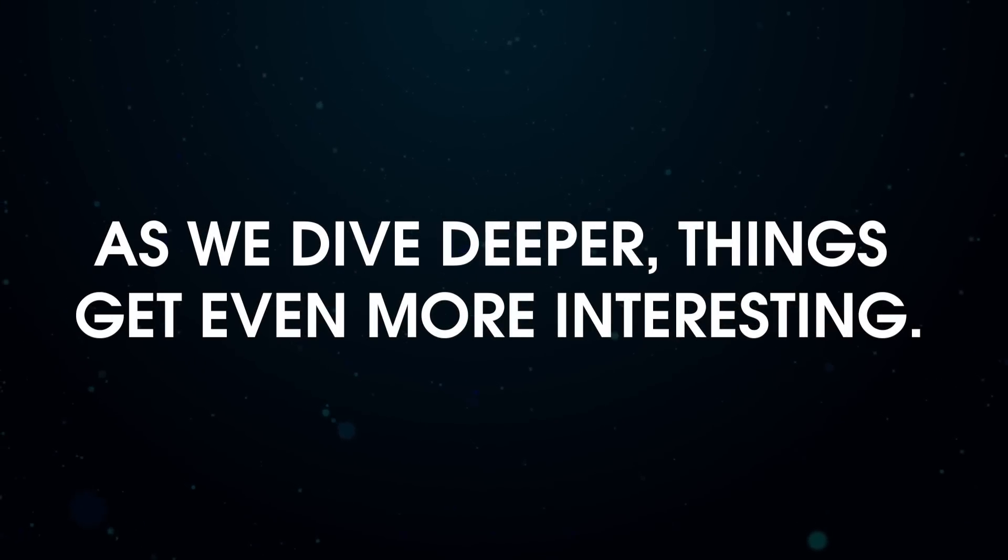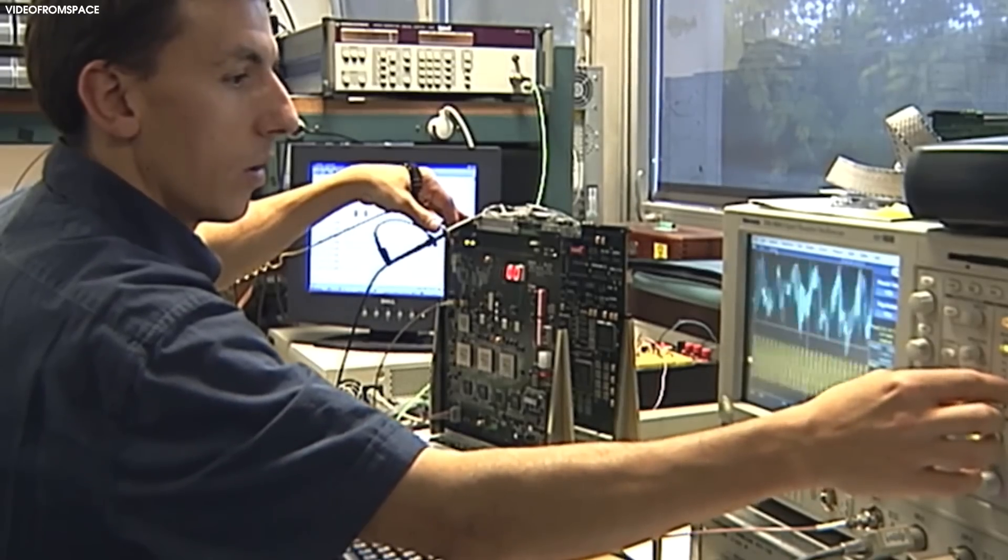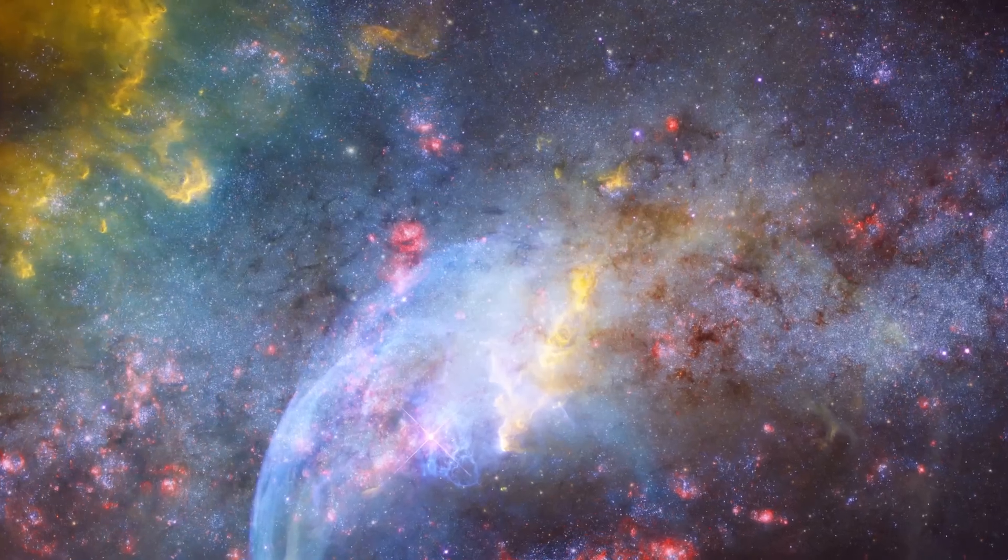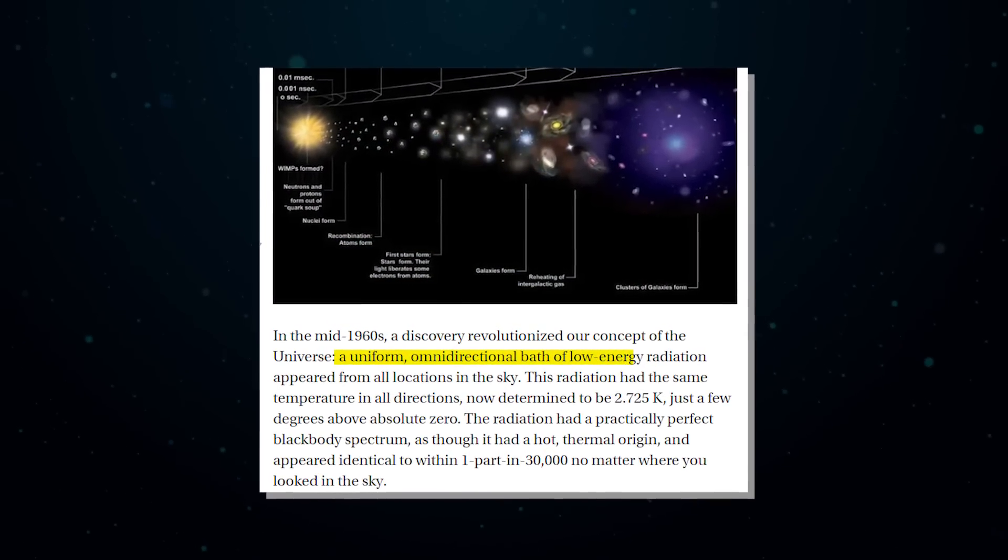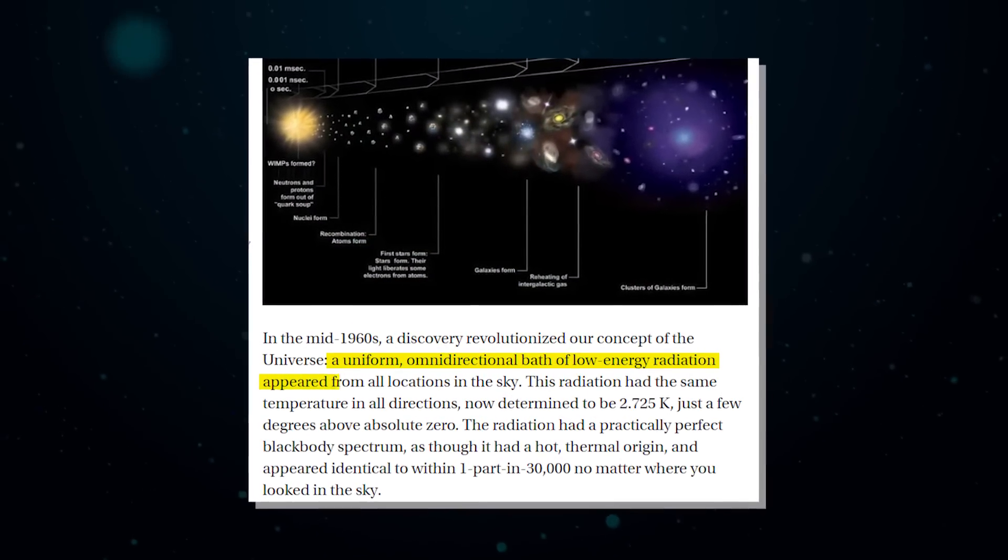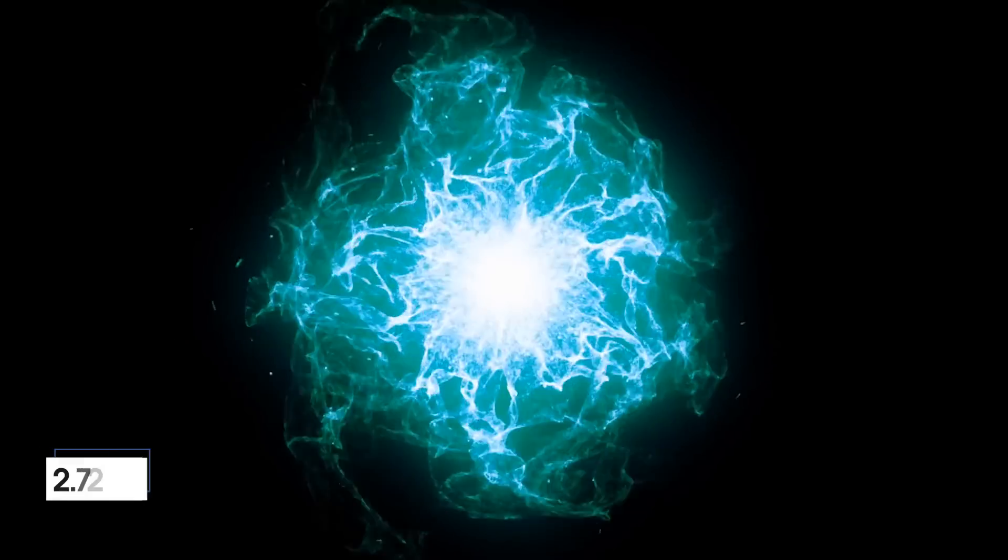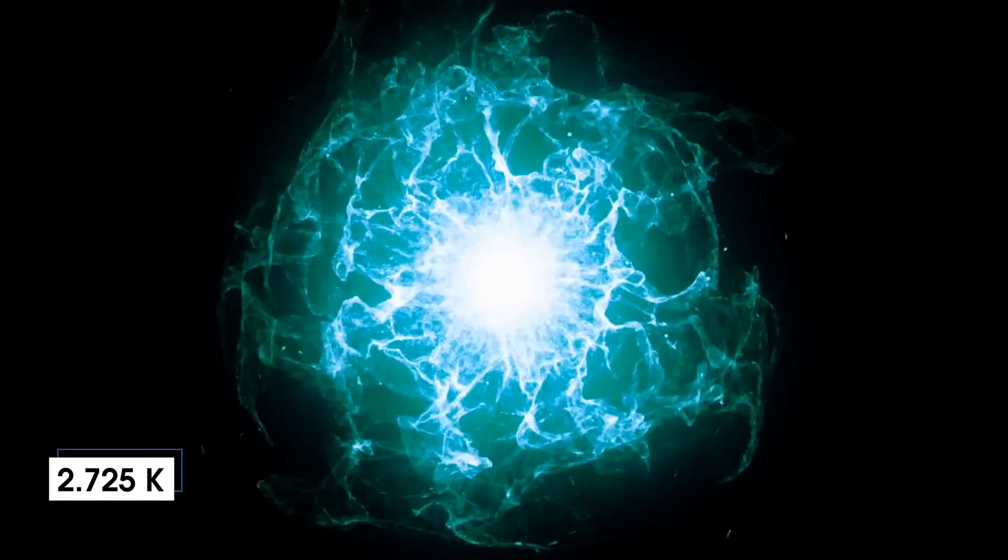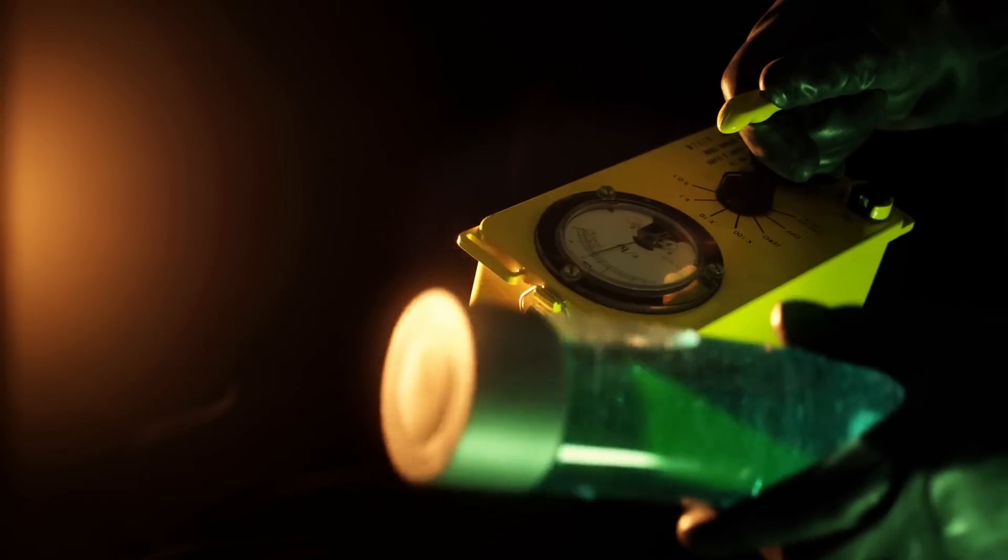As we dive deeper, things get even more interesting. In the mid-1960s, a discovery revolutionized our concept of the universe. A uniform, omnidirectional bath of low-energy radiation appeared from all locations in the sky. This radiation had the same temperature in all directions, now determined to be 2.725 Kelvin, just a few degrees above absolute zero.